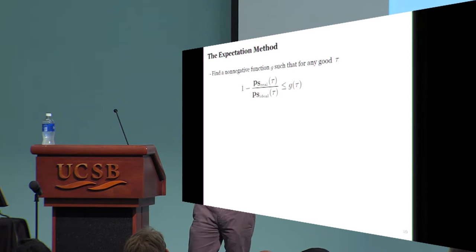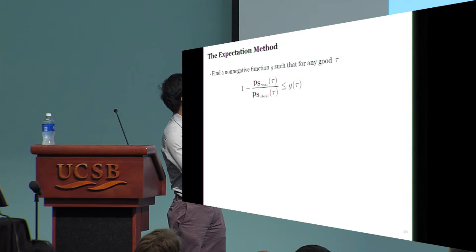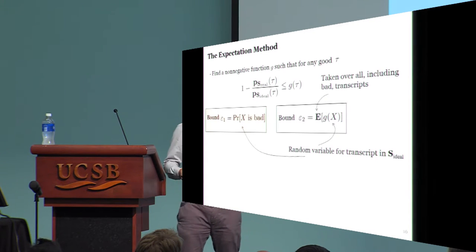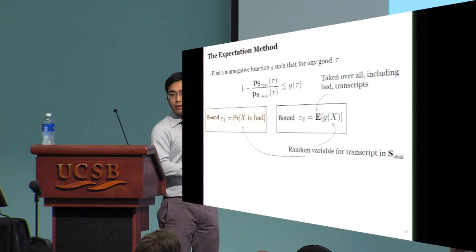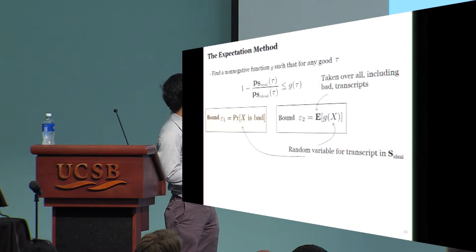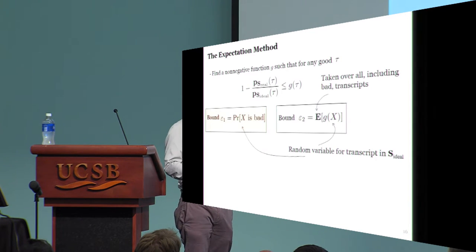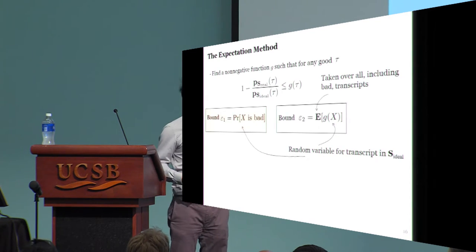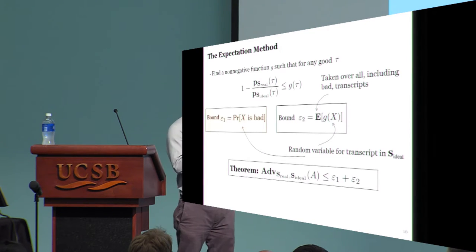To get around that, in our expectation method, we just demand that there must be some transcript dependent G of tau for every good transcript tau. We then compute the expectation value of this bound. The expectation is taken over all transcripts, including bad ones. By doing this, if just a few good transcripts mess up, then our epsilon 2 is still small. And again, the distinguishing advantage is bounded by the sum of epsilon 1 and epsilon 2.